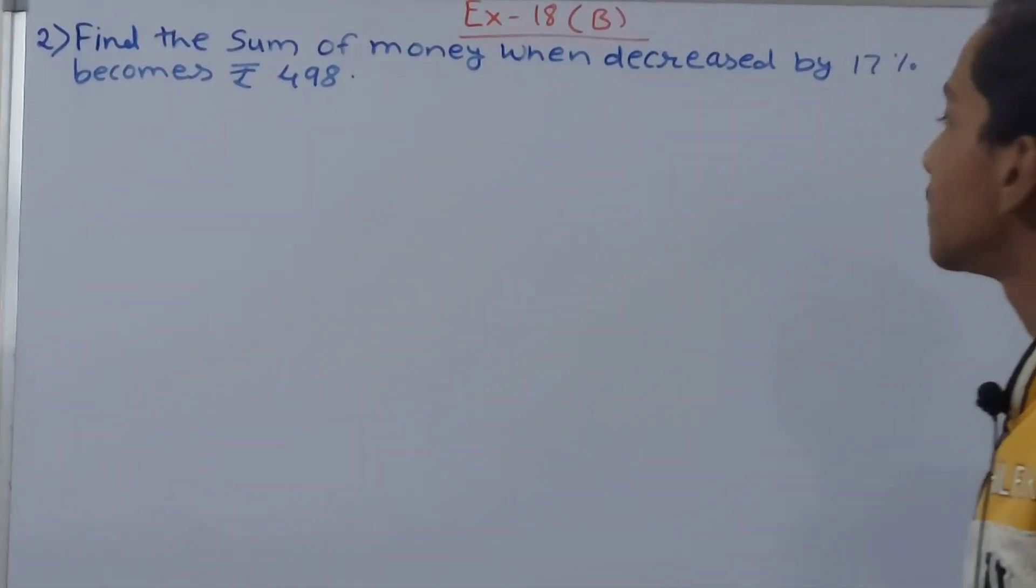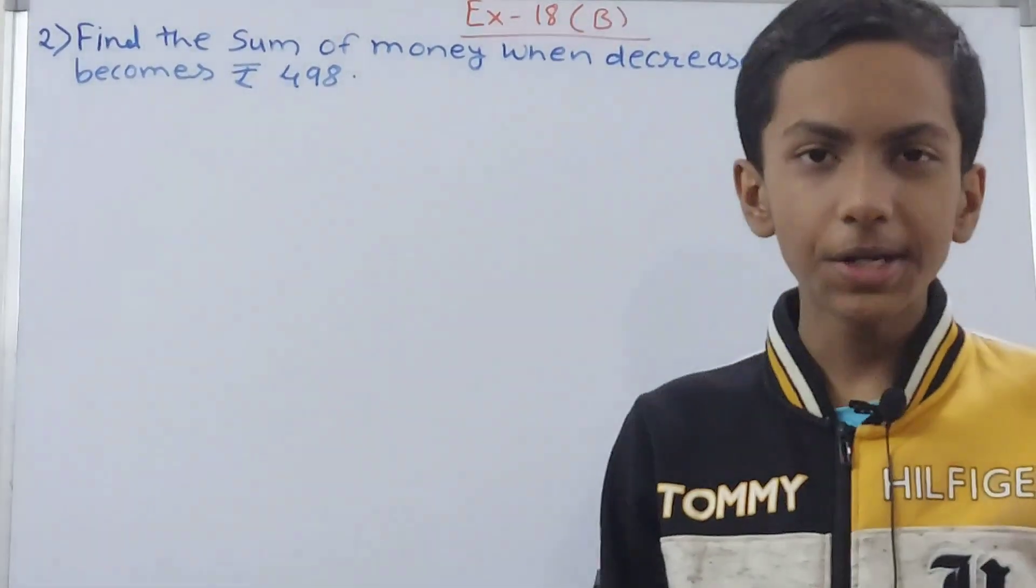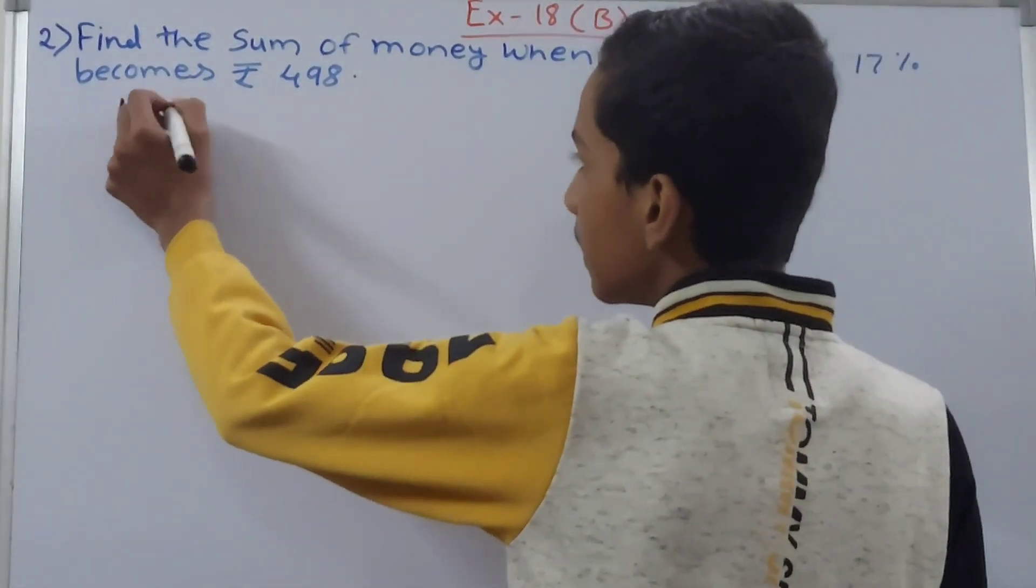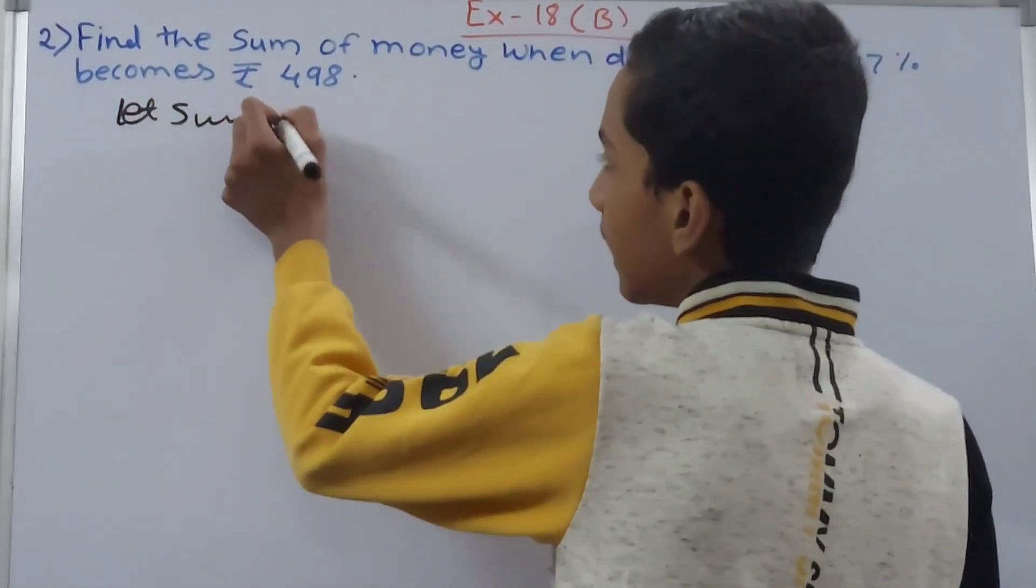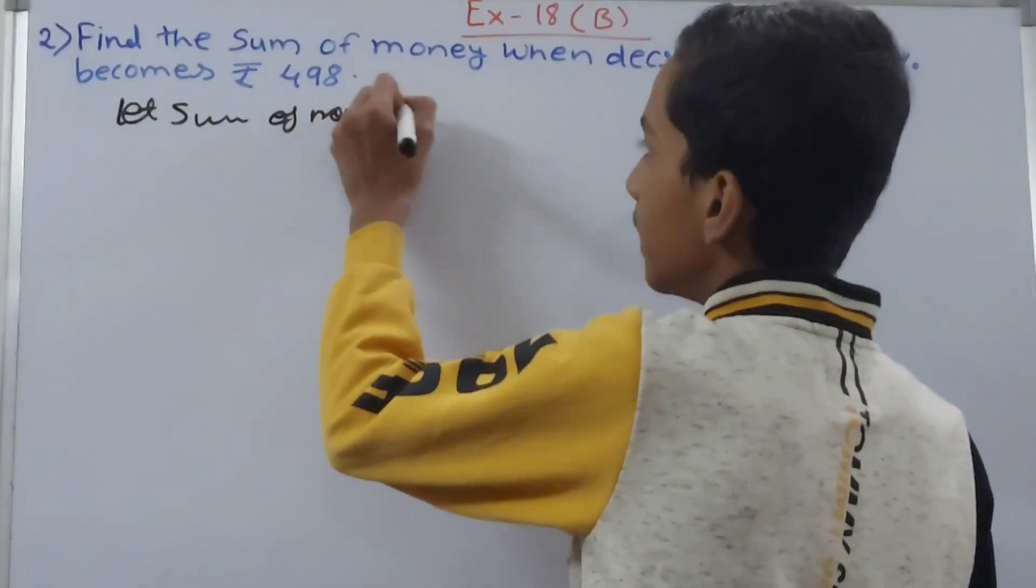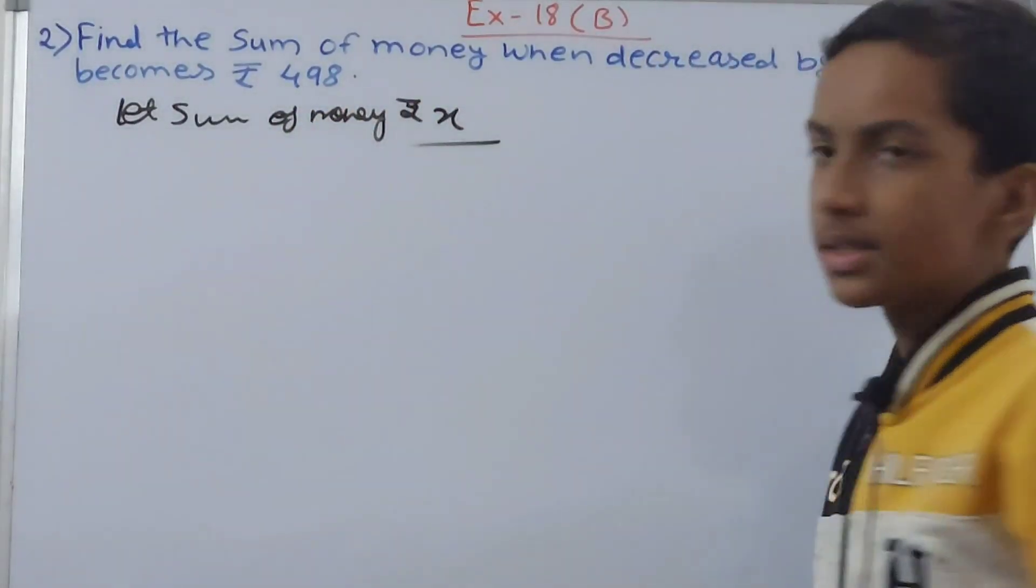Find the sum of money when decreased by 17 percent becomes ₹498. So let the sum of money first of all be x. We are assuming that our sum of money is ₹x.